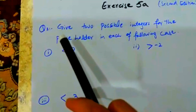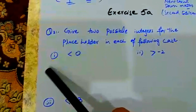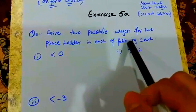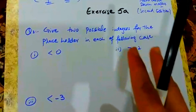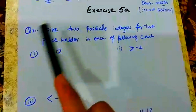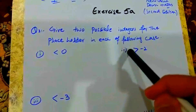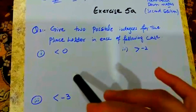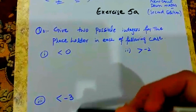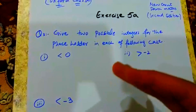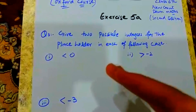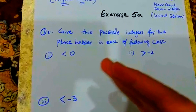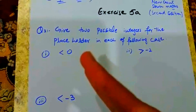Question 3: Give 2 possible integers. We have 2 possible integers for the placeholder in each of the following cases. We have some placeholders given, and we need to find 2 possible integers which will satisfy this condition.